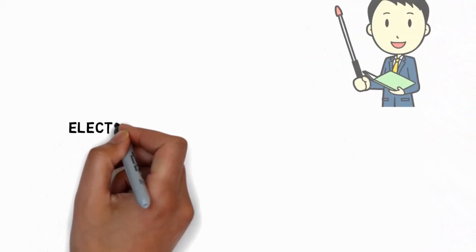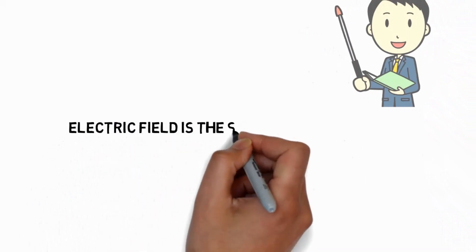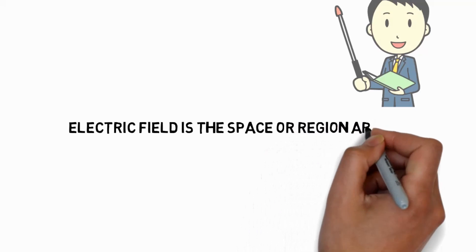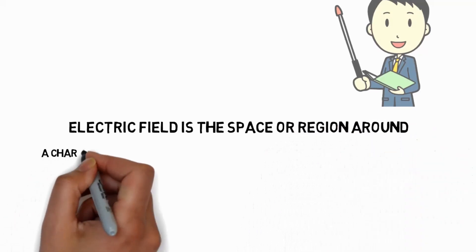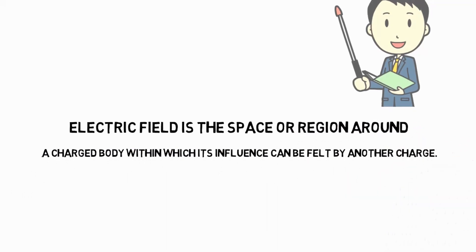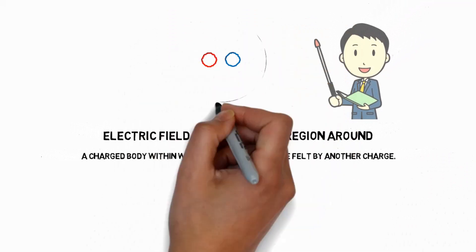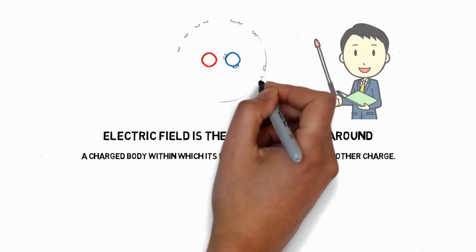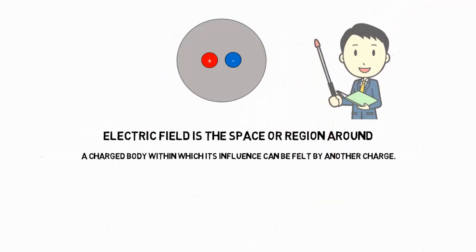Let us start our first topic: electric field. Electric field is the space or region around a charged body — let us say a proton or electron — within which its influence can be felt by another charge. If two opposite charges, protons and electrons, are kept in one place, there is a circular region around them where the force of attraction can be experienced. That region is known as the electric field.